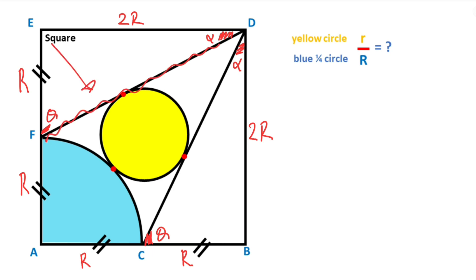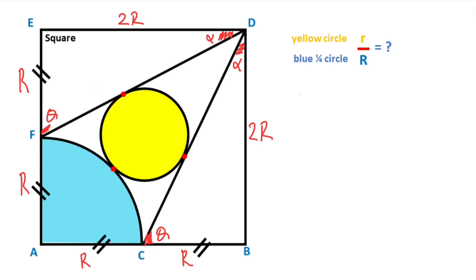So these two triangles are congruent, which means their hypotenuses are equal — this length, this length, and this length are all equal. At the same time, angle AFD and angle ACD are equal. That means CAFD is a kite.